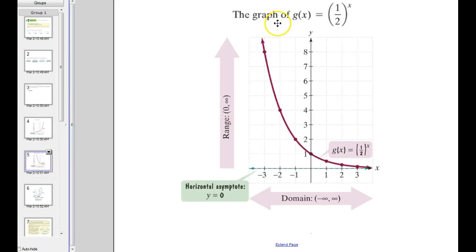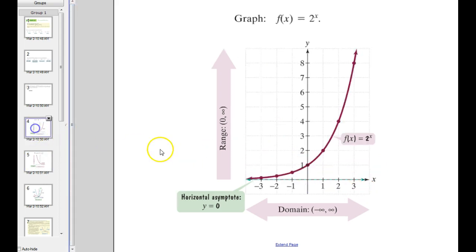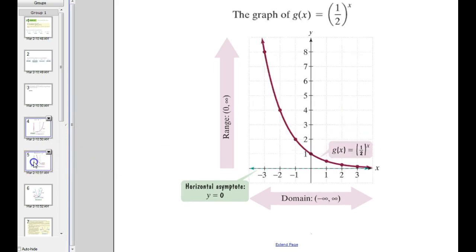All right, and then if the base is between 0 and 1, okay, so it's positive, but it's between 0 and 1, we get something similar, but the graph actually goes downhill left to right. It decreases, but it's the same look to it. It's got that horizontal asymptote y = 0. All right, it crosses the y-axis at 1, just like it did before. Okay, domain and range are still identical. It's just the graph is kind of flipped around.